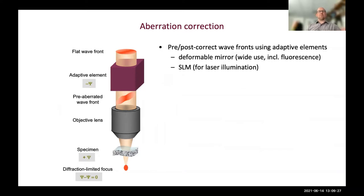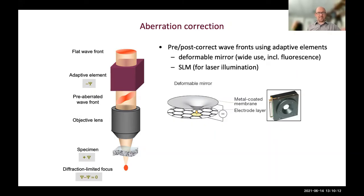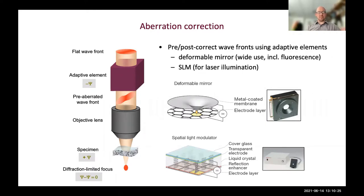There are two main types of adaptive element. The first is a deformable mirror - a reflective surface whose shape can be changed by applying forces using an actuator structure. By changing its shape, we can change the way it adds or removes phase variations from the reflected beam. Deformable mirrors are useful in microscopes because they are polarization insensitive and have broadband operation, making them well suited for fluorescence imaging with multiple channels.